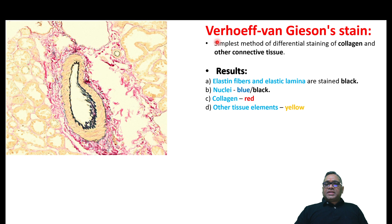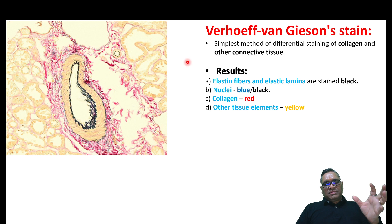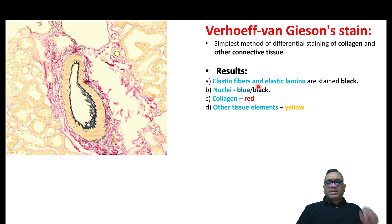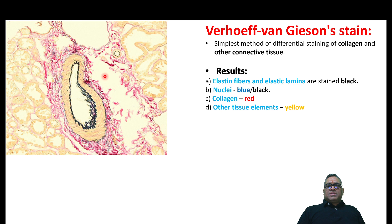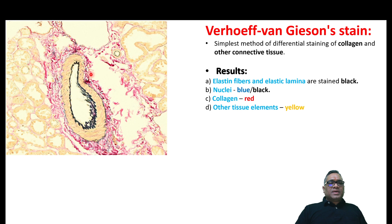Verhoff von Gieson stain is used for collagen and other connective tissue — it discriminates between collagen versus other connective tissue. Collagen will be red, and you can see all the red color is the collagen. Elastin fibers and elastic lamina will be black — you can see this black line is elastic fiber and elastic lamina. Nuclei will be blue-black and other tissue will be yellow. So collagen is red, elastin is black in Verhoff von Gieson stain.